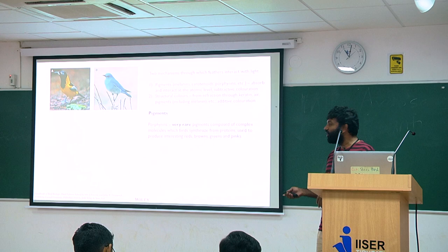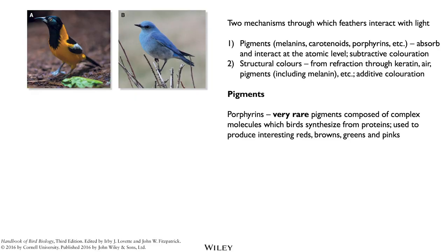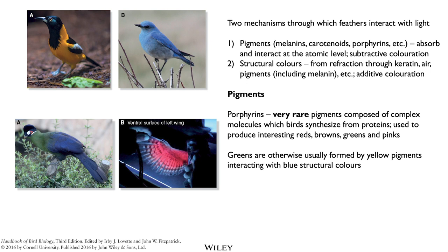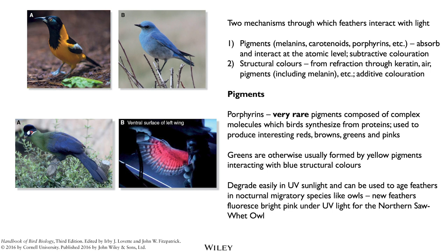There is a rarer pigment called porphyrins, synthesised from proteins, not present in most birds. They can produce spectacular colours — red, brown, greens, and pinks. All the lovely colours on the Turaco are from porphyrin pigments. An owl's wing shines pink in UV light, again through porphyrins. Greens are usually formed from yellow pigments interacting with blue structural colours. Unlike some other pigments, porphyrins degrade easily in UV light, and they can be used to age feathers — at least in owls, some studies age birds through the amount of porphyrin remaining.